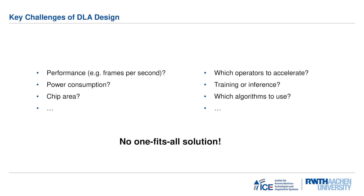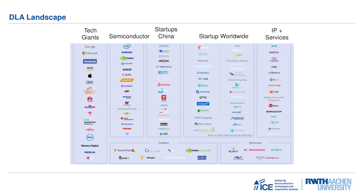How does one go about designing a deep learning accelerator? There are several optimization criteria, or key performance indicators (KPIs), to keep in mind, such as performance, power consumption, chip area, and cost. But there are many open questions: how should I partition my algorithm in hardware and software? Is it a training or inference accelerator? Which algorithm is best for my application? There is no one-size-fits-all solution. There are currently many companies working on DLAs for specific use cases, so it is important to know the KPIs of your design as early as possible to decide if you can compete.